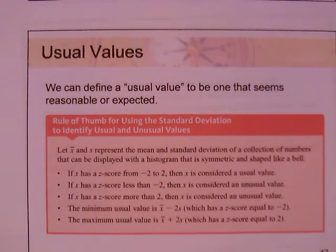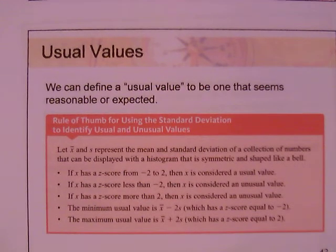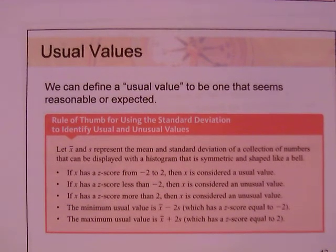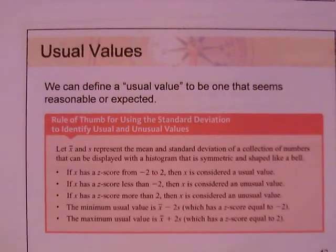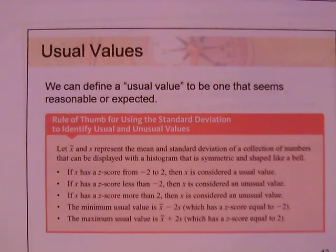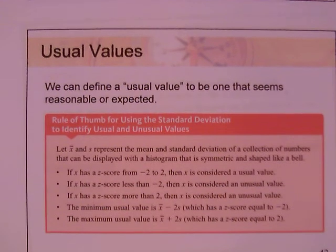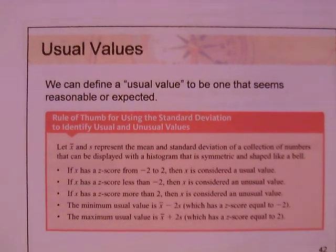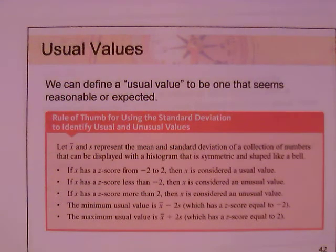If X has a Z-score less than negative 2, then X is considered an unusual value. Also, if X has a Z-score more than 2, then X is also considered an unusual value. In other words, if your X has a Z-score between negative 2 and 2, it's considered usual. If it's less than negative 2 or greater than positive 2, your X-value is considered unusual. You have to convert your X to a Z-score, knowing your mean and standard deviation.